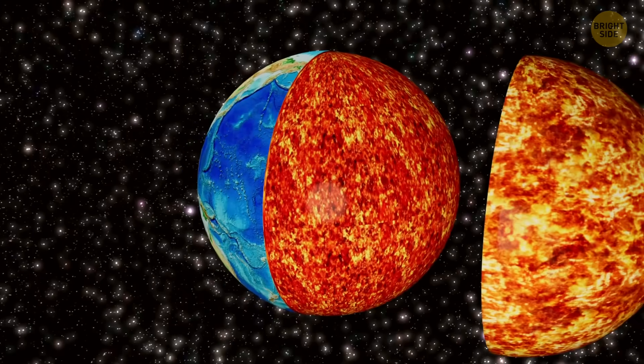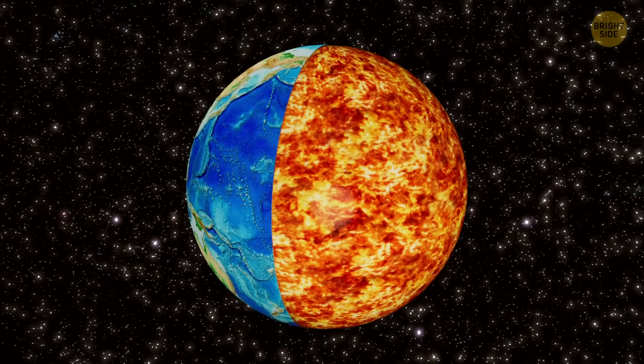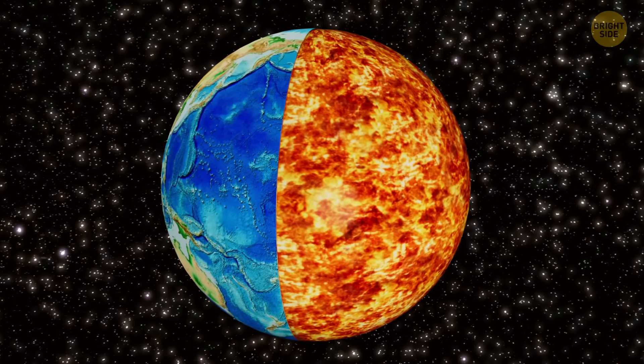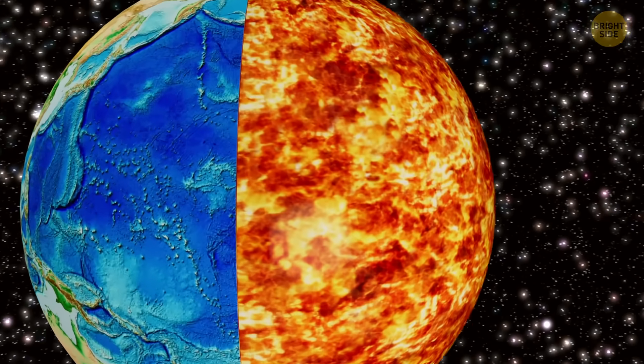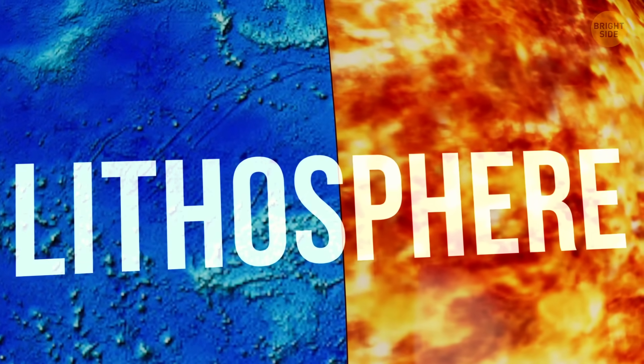The outermost part of the mantle is cooler and more rigid, behaving more like the crust above it. Together, this uppermost part of the mantle and the crust are called the lithosphere.